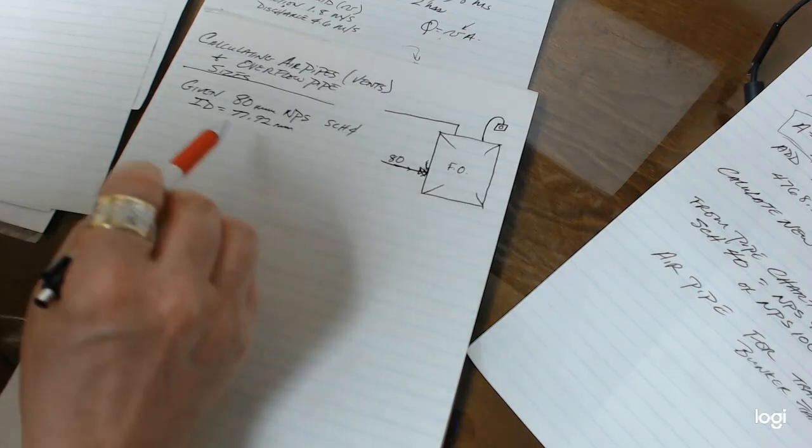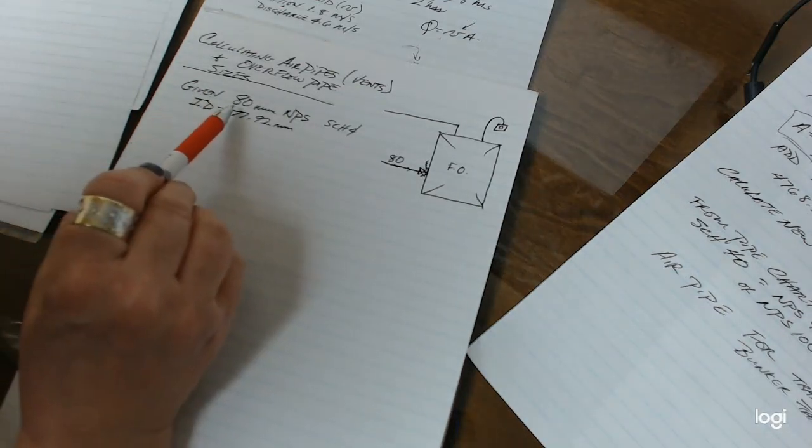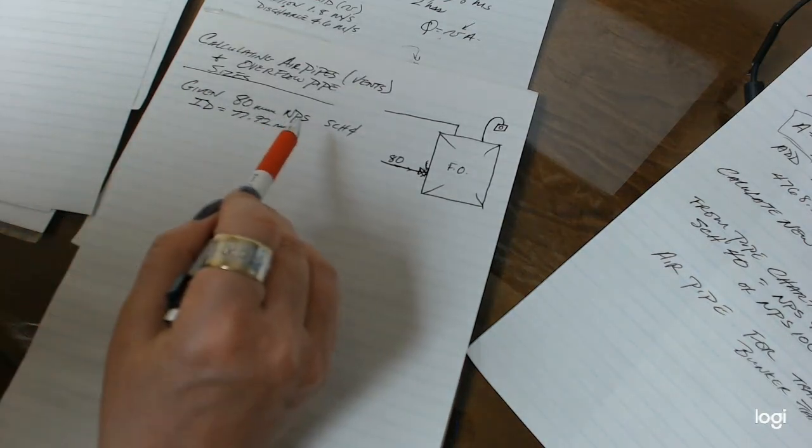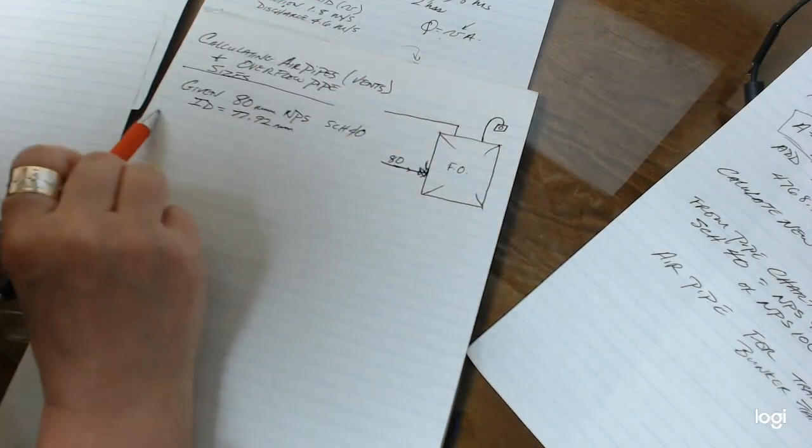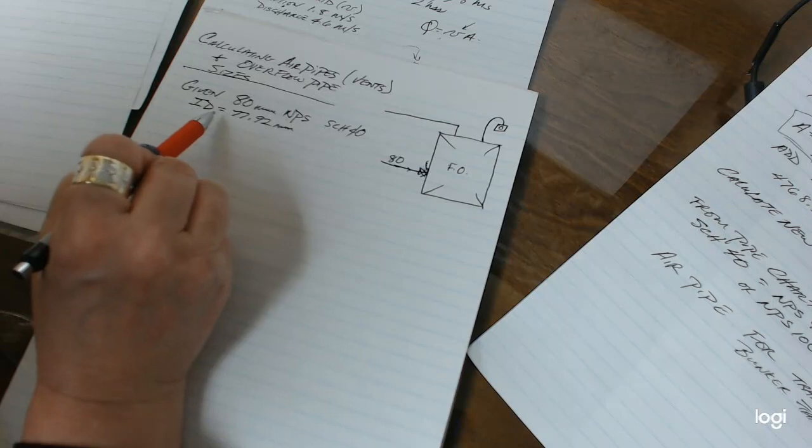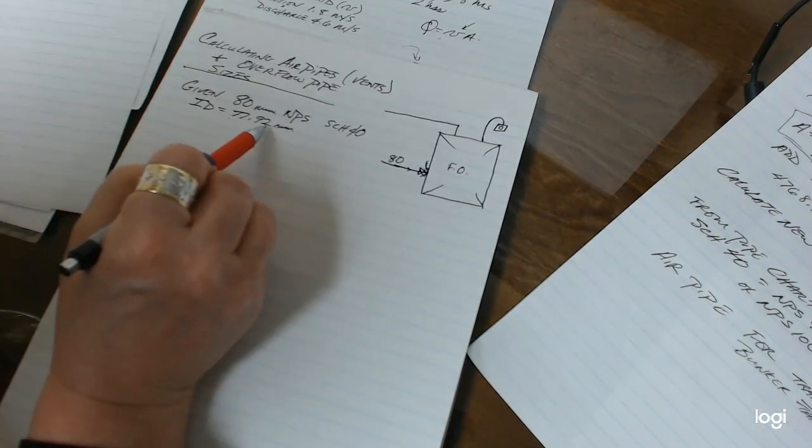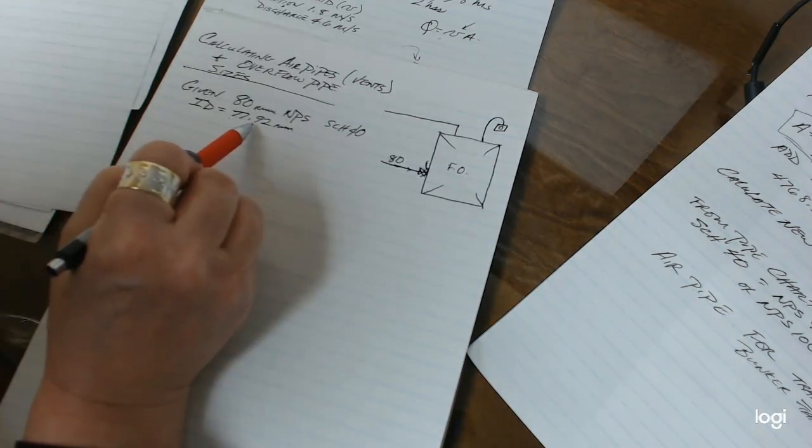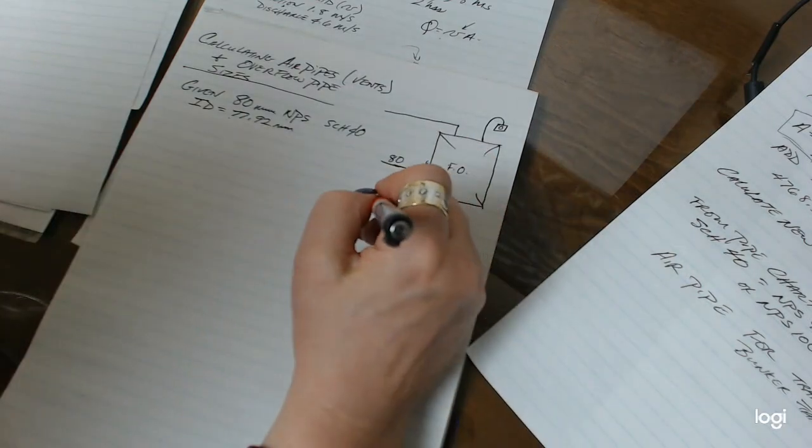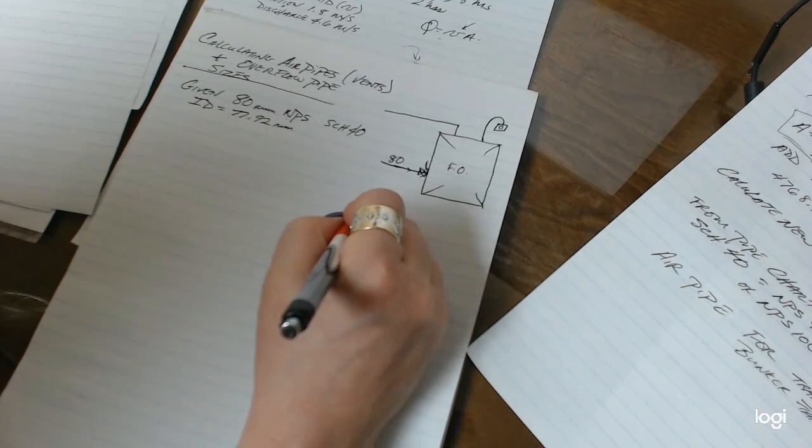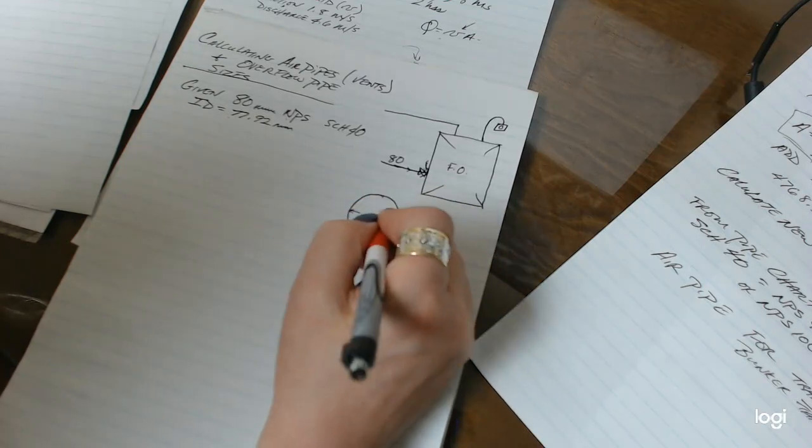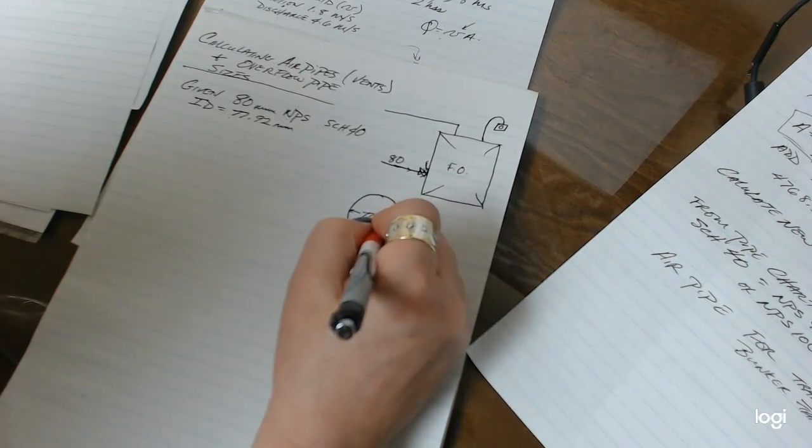In this scenario, I've given a situation where we've got our 80 millimeter nominal pipe size and it's schedule 40. And from the pipe charts, I have indicated that this ID is 77.92 millimeters. So what we're looking at here is we're looking at that ID, 77.92 millimeters.